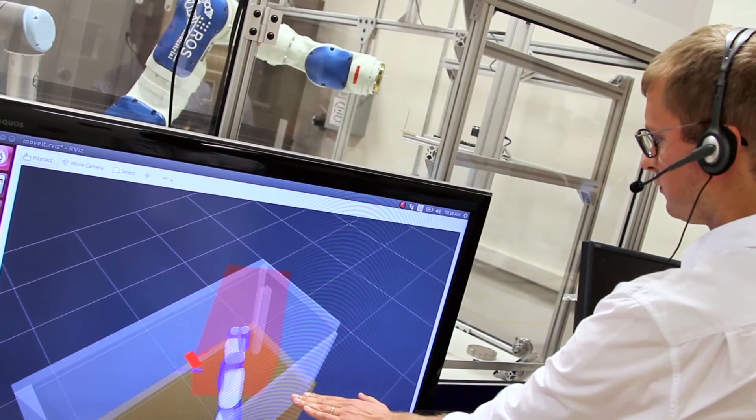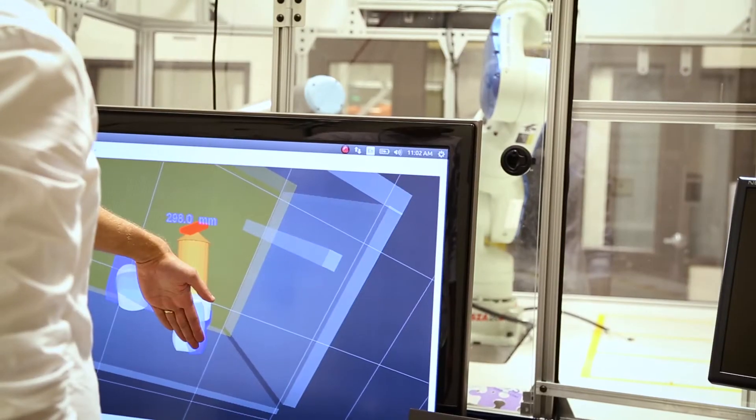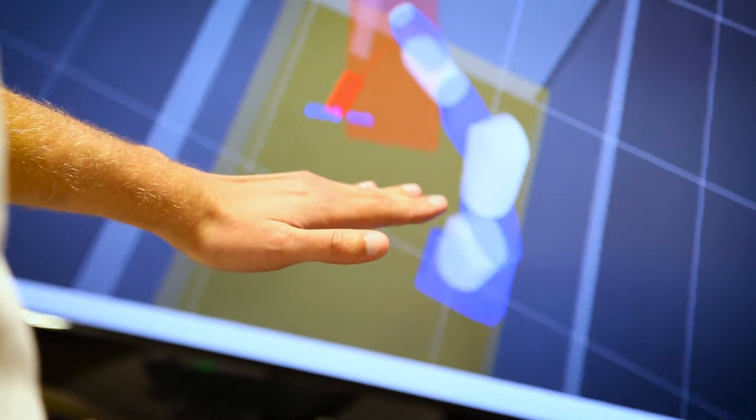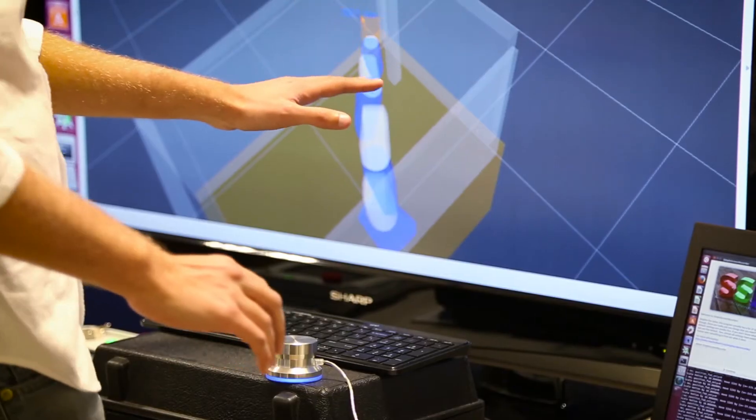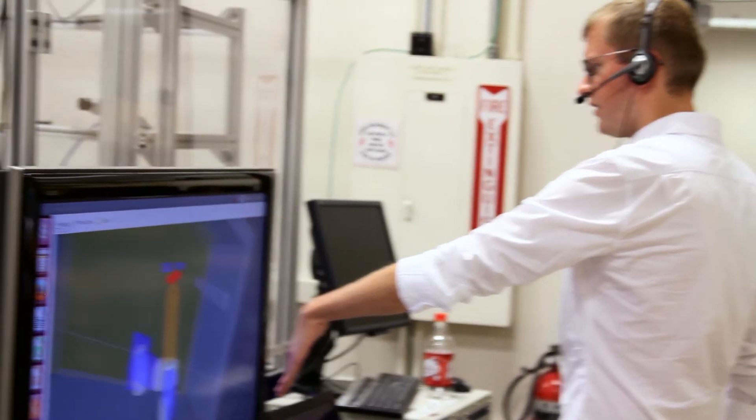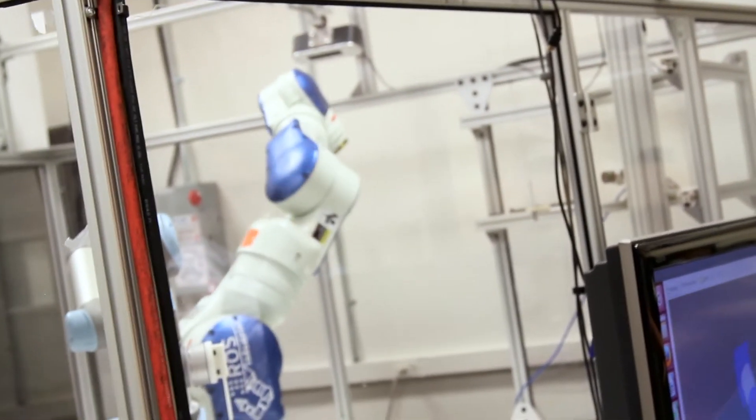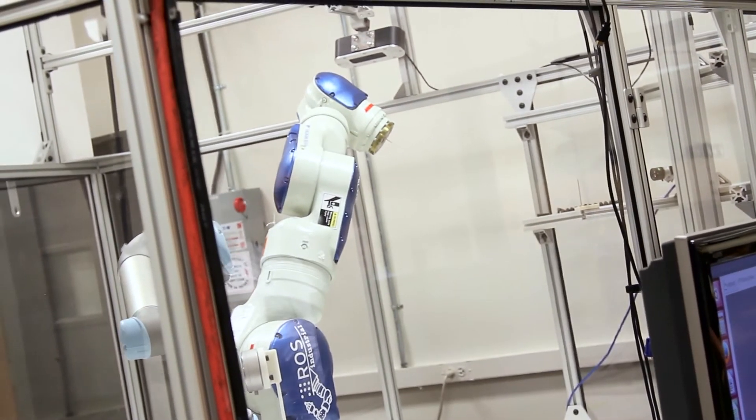However, when telerobots are deployed to execute tasks, it is the human operator who not only needs to figure out the exact task procedure, but also needs to understand how to solve the task using the controls available to him or her.